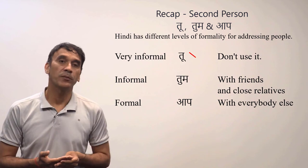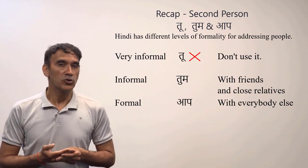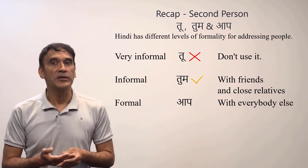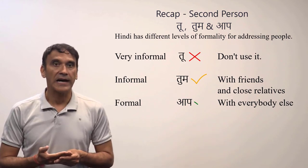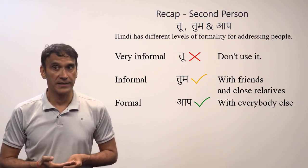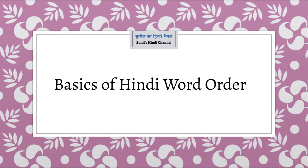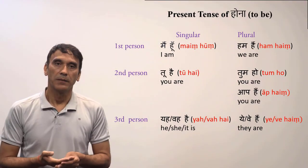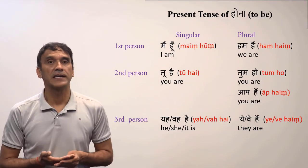Let's recap the second person pronouns. TU is extremely informal and can be rude, so don't use it. TUM is informal — you can use it with friends and close relatives. AAP is the most formal and should be used with everybody else; you should use it most of the time.